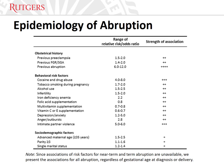Many factors are associated with abruption, but the factors with the greatest risk include prior abruption, chronic hypertension, preeclampsia, cocaine and drug use, and intimate partner violence. On this slide, we provide more information about associations of risk factors stratified by obstetrical history, behavioral risk factors, and sociodemographic factors.